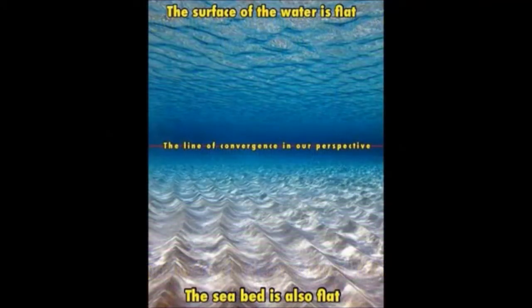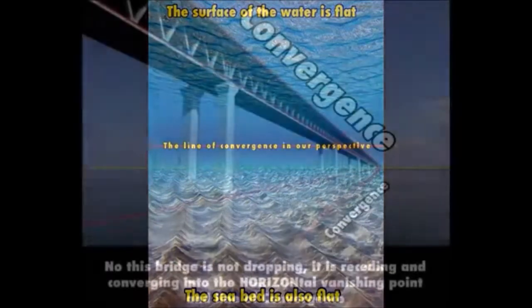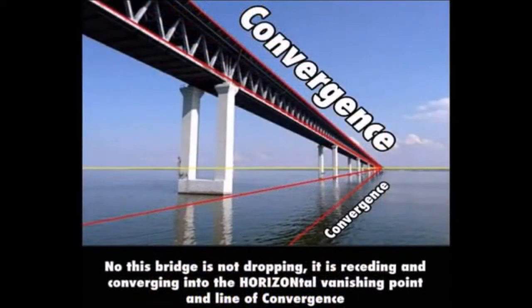Lines or objects below the eyeline, remaining at the same level, seem to rise as they recede, until they vanish in the eyeline. Similarly, lines or objects above the height of the spectator, and maintaining a constant altitude, appear to descend until they are lost in the eyeline.